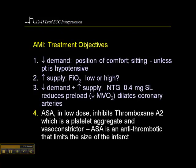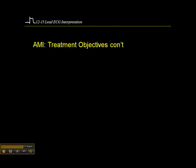We want to administer acetylsalicylic acid, or ASA, in low dose. ASA alone has been shown to reduce mortality in acute MI patients by about 23%, so it's quite a significant drug. At low dose, it inhibits a substance called thromboxane A2, which is a platelet aggregator and vasoconstrictor. So ASA is essentially an antithrombotic — it doesn't break up the clot, but it keeps the clot from getting bigger, which in turn limits the size of the infarction.